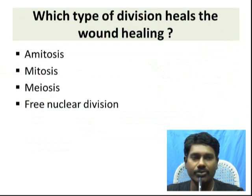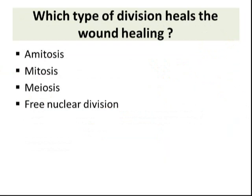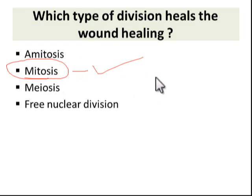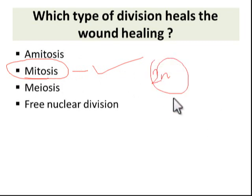Next question: Which type of division is responsible for wound healing? Mitosis is the division. Why mitosis? Mitosis occurs in somatic cells, so mitotic division will help to cure wounds.